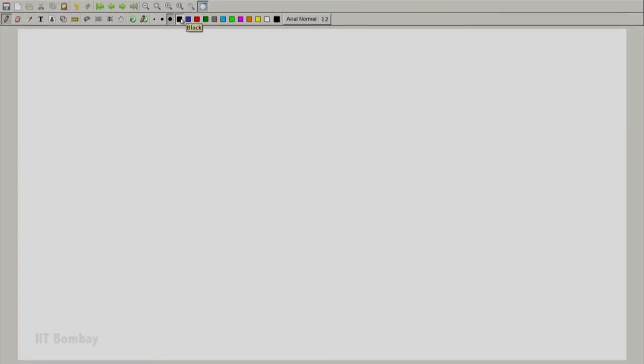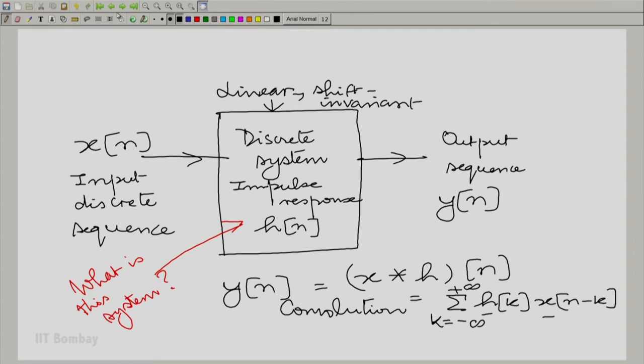All that we need to do to get the discrete system is take the underlying continuous system that you wanted to operate, restrict it to minus capital omega m to plus capital omega m, and then treat that as the frequency response of the discrete time system. So simple. Let us put it down clearly.